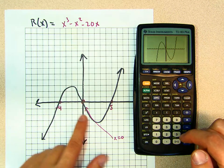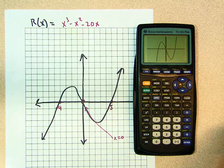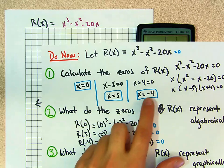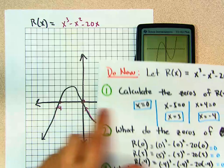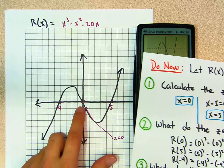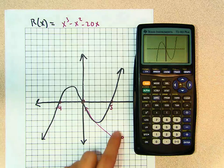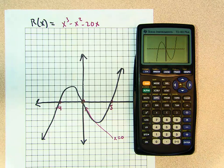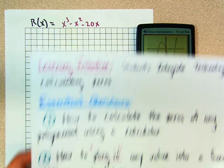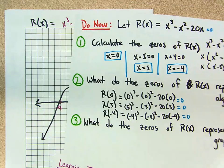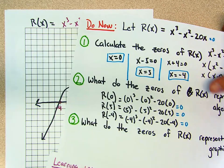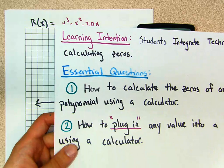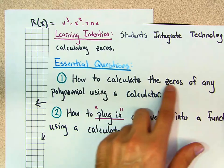It looks more like this. And notice where are my zeros — they're the same zeros we found algebraically: negative 4 right there, zero at this intersection, and 5 right there. So the game plan today: if I say calculate the zeros, we factor — that's how you do it algebraically. But let's say you want to use the calculator. How do you calculate the zeros of any polynomial using a calculator?